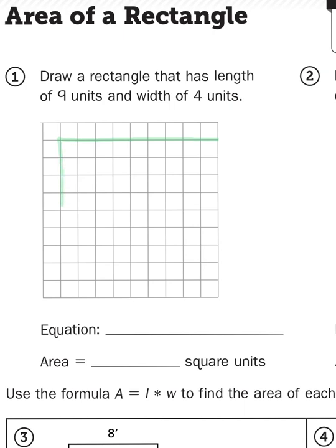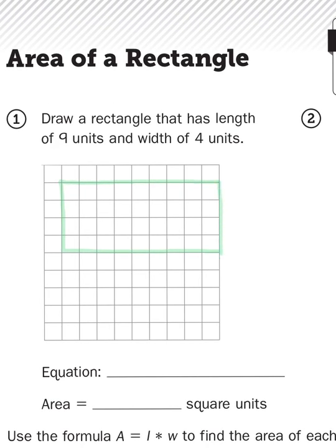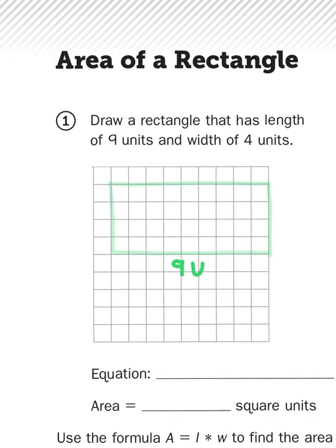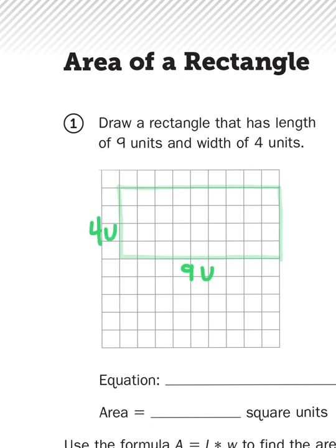So then I'm going to make a line that intersects at a perpendicular 90 degree angle of four squares down. That's the width. And I'm just going to complete my square, or rectangle I should say. Okay, so now I have my rectangle that has a length of nine and a width of four. So nine units, or nine U, and four units, or four U.